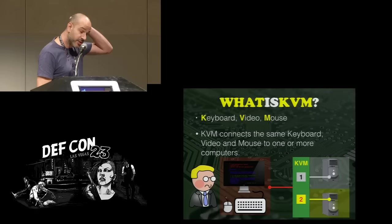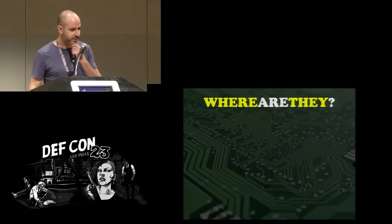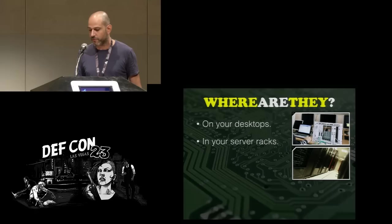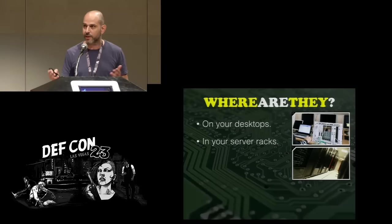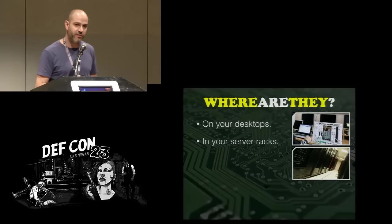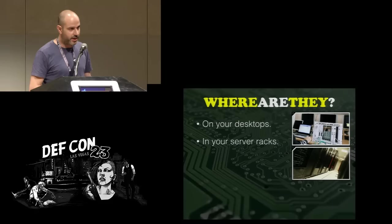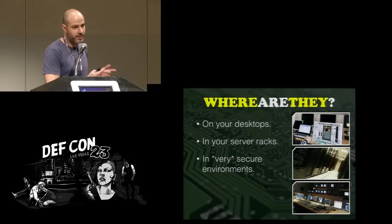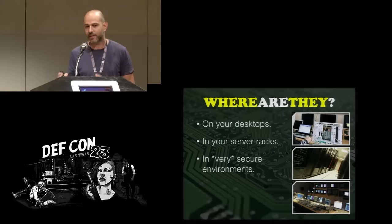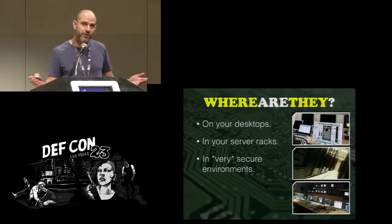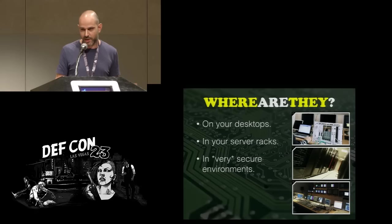Where can we actually find those KVM devices? We can find them on your desk, as in the example I just showed, or we can also find them inside your server racks — because a server rack holds like something like eight servers, and it only makes sense to put a KVM in there to avoid having eight sets of keyboard, video, and mouse. Last but not least, we can find KVMs in very secured environments, mainly because in those environments we usually have several networks — some pretty sensitive and some just a corporate network connected to the internet. For a user that needs to work on some of these networks at the same time, it only makes sense to have a KVM on his desk. So to sum it all up, KVMs are everywhere — in every technologically rich environment you'll ever go to, you'll probably find a lot of these KVMs just laying around.